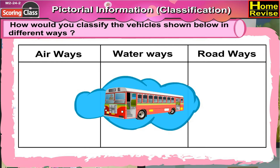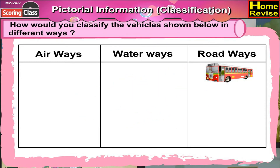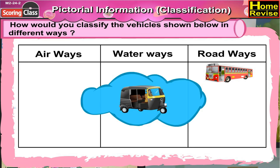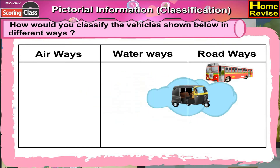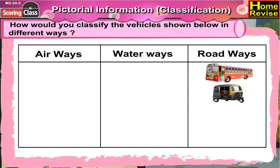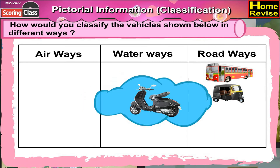Here we have a bus. Bus travels on the road, so it goes under roadways. Here is an auto rickshaw — that again travels on road, so it goes under roadways. Scooter moves on road, right? So it goes under roadways.